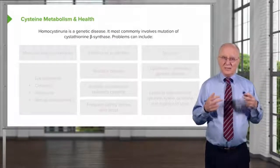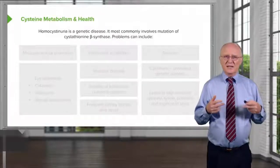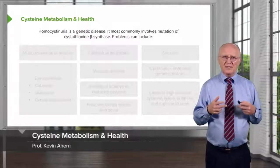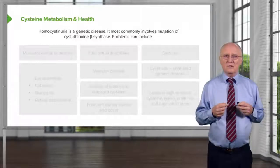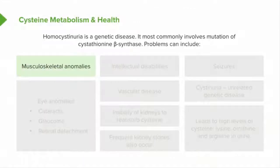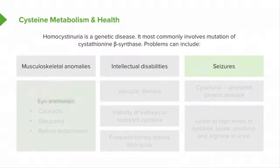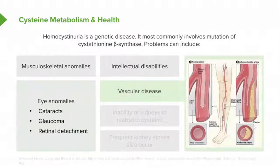Homocystinuria is a pretty severe disease. It's a genetic disease caused by a deficiency of an enzyme known as cystathionine beta synthase. There are many problems that can arise in homocystinuria. There are musculoskeletal anomalies, intellectual disabilities — and one of the reasons we have these intellectual disabilities is because of the problems with nerve tissue in the brain. Seizures can result, and there are numerous eye anomalies. Vascular disease also occurs because we have a lot of homocysteine accumulating, as it's not being converted into cysteine in the process.